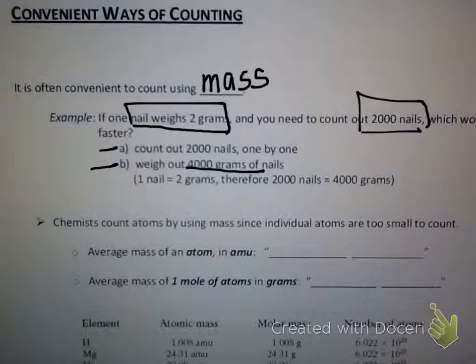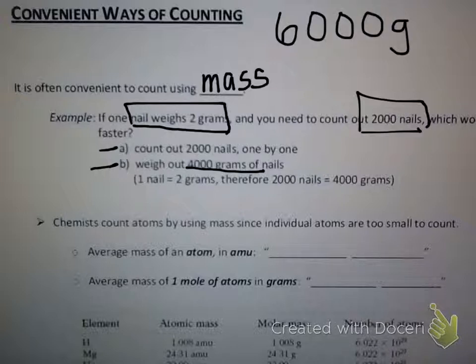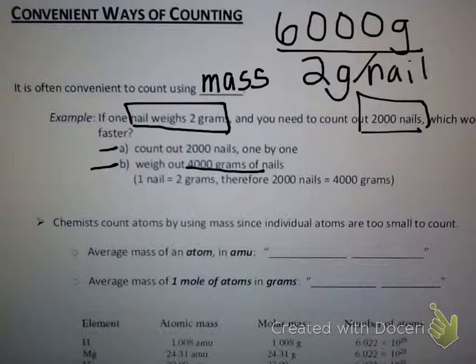Now think about something like an atom that you can't count item by item. You can weigh atoms though — if you have a large sample you can weigh how much that sample weighs. If you know how much one atom weighs and you know how much the entire sample weighs, can't you figure out how many atoms of that element you have? For example, if I have six thousand grams of nails and each nail weighs two grams, I have three thousand nails.